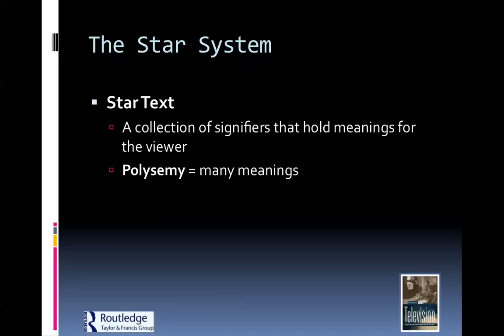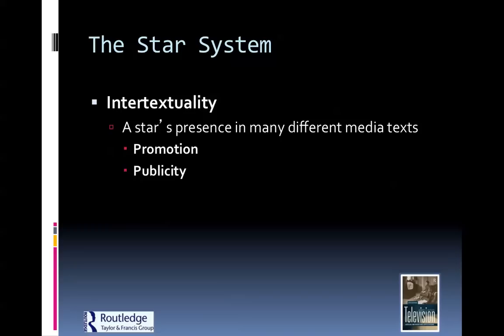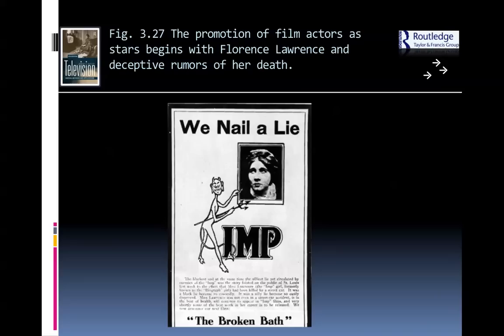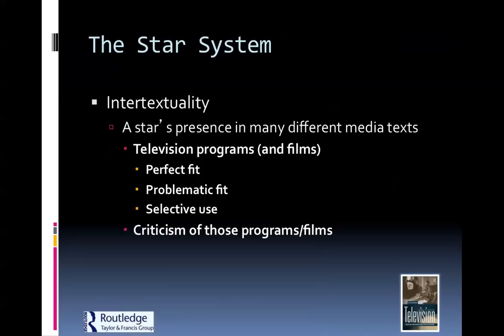The last thing we'll talk about is the star system. TV stars are very wealthy and very much in the public eye. The star text is really a collection of signifiers that hold meanings for the viewer — many meanings. Stars go through lots of different things; we see them in a show, but their real lives remain a question mark. Intertextuality is important — a star's presence in many different media texts includes their promotion and publicity. They all have publicists that help them define their personality for the public.